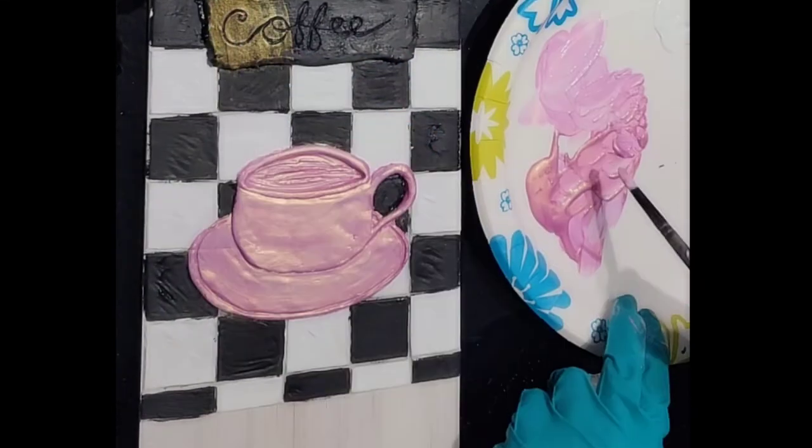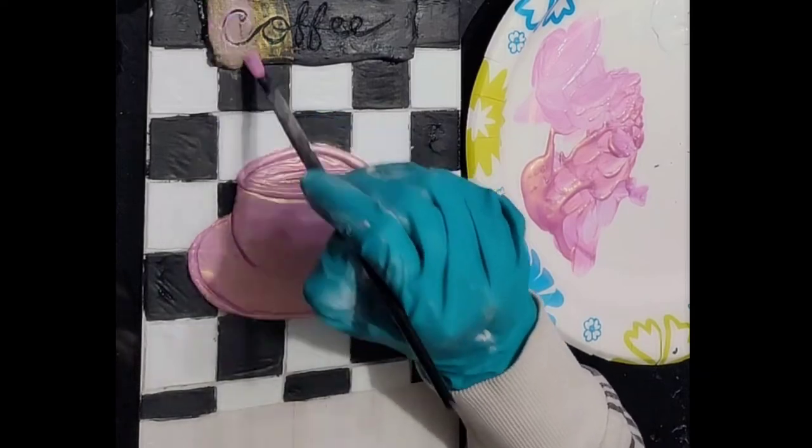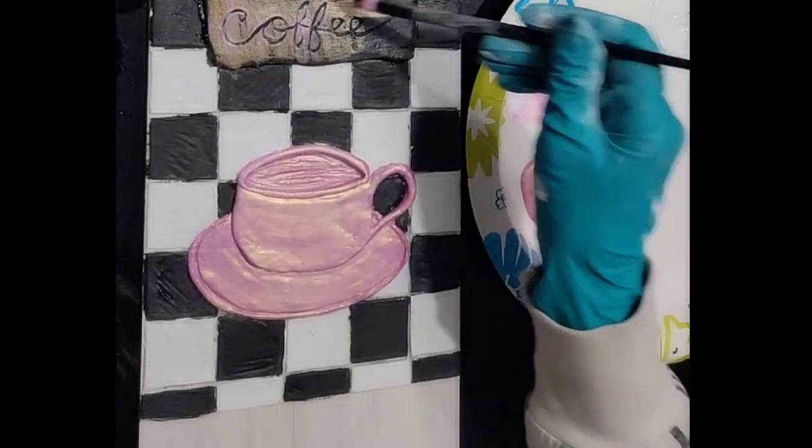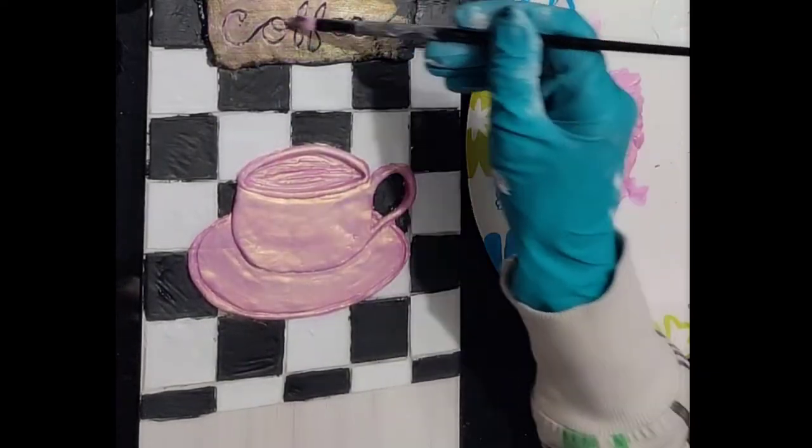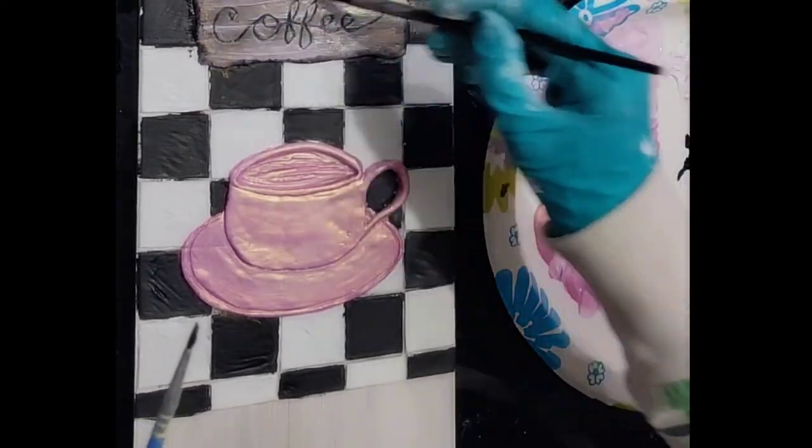We're going to go in with our pink color shift paint here and paint our cup. Then we're going to go over the coffee sign over the black. It looked quite gold, so I mixed the pink with a little bit of white and went over a couple times. I like the variation, so I just kind of added it here and there and wiped it on.